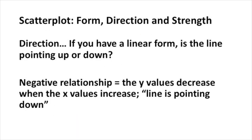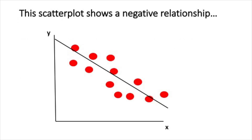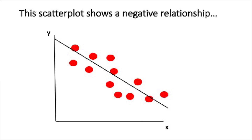If you have a negative relationship, the y values decrease when the x values increase, so the line is pointing downward. This scatter plot shows a negative relationship. You have all these points, and it's pretty clear you can picture a line going through them, but the line is downward sloping — so when the x values get larger, the y values get smaller.